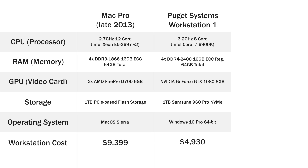Our first PC workstation comes in at just over half the cost of the Mac Pro. It has an 8-core CPU that's two generations newer than the one in the Mac Pro, 64 gigabytes of DDR4 memory, a GeForce GTX 1080 video card, and a 1 terabyte NVMe storage drive. We currently sell this system for $4,930.